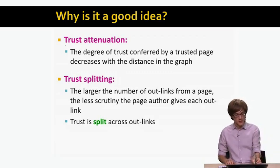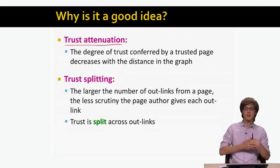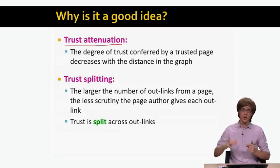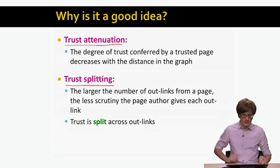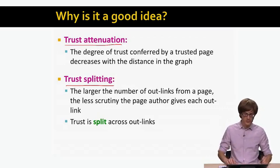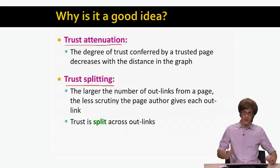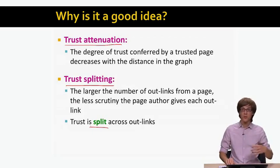There is the notion of trust attenuation: the degree of trust conferred by a trusted page decreases with the distance from that page in the graph. The farther a page is from the trusted set, the lower the trust it receives. There is also trust splitting: the larger the number of outlinks from a page, the less scrutiny each outlink receives. If a page has lots of trust but many outlinks, that trust gets split into small chunks distributed over the target pages — exactly what happens in topic-specific PageRank with the trusted teleport set.